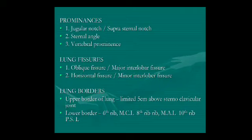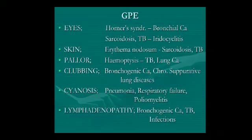The upper border of the lung is five centimeters above the sternoclavicular joint. The lower border differs by area: at the mid clavicular line it is up to the sixth rib; at the mid axillary line up to the eighth rib; and at the mid scapular line it is up to the tenth rib. These are the important landmarks you should know before doing the systemic examination.